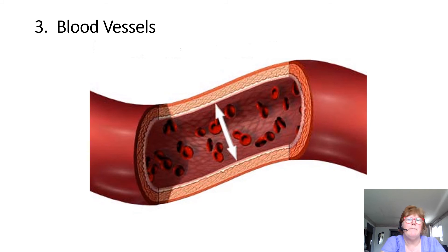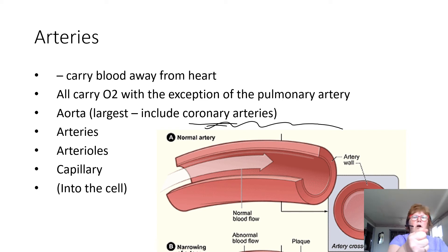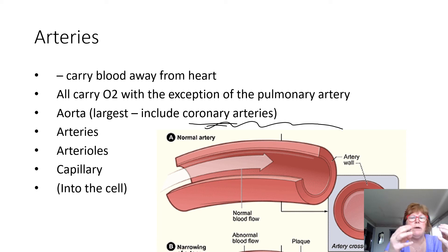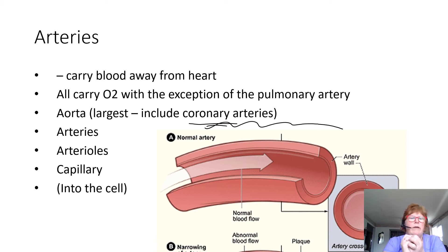There are different types of blood vessels in our body. Arteries carry blood away from the heart, and all of them carry oxygen except the pulmonary artery, which goes from the heart back to the lungs. The aorta is the largest and runs right off of the heart. Then, just like the bronchial tree, there are arteries — like the carotid and femoral — and then arterioles, which are the branches that go into each cell. The capillary network is the bunch of vessels that goes in and out of the cell.